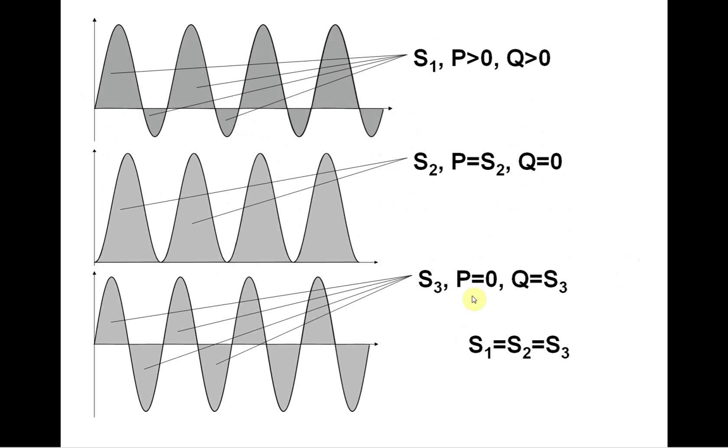For given voltage and current, apparent power is always the same, independently from active and reactive power values.